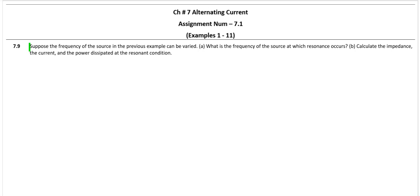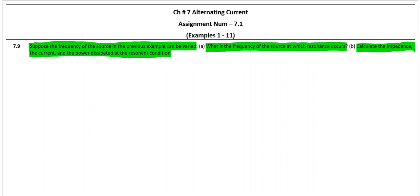The question is: suppose the frequency of the source in previous example, that is 7.8, can be varied. What is the frequency of the source at which resonance occurs? Calculate the impedance, the current, and the power dissipated at the resonant condition.